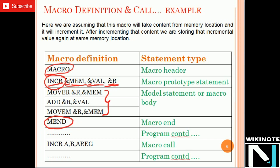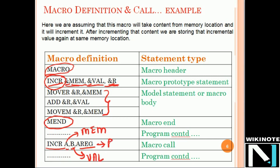Now we will see the calling of this macro named INCR. While calling, I use the macro name INCR followed by the actual parameters: A, B, and A_reg. While defining the macro I used formal parameters MEM, VAL, and R. So A maps to MEM, B maps to VAL, and A_reg is treated as R. This is how actual parameters replace the formal parameters. While expanding the macro, we deal with the actual parameters, not the formal parameters.